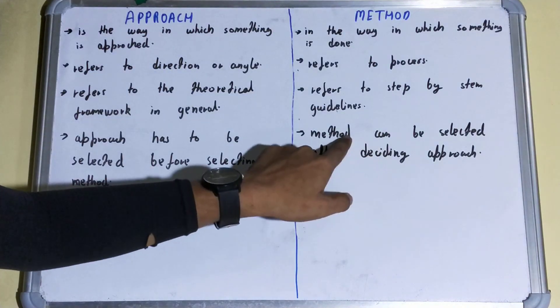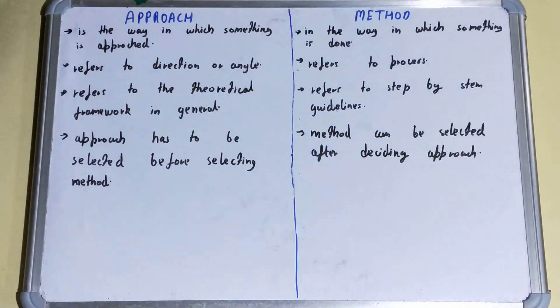In the case of method, the method can be selected after deciding the approach. So first you need to select the approach and then you can select the method. Like, I want to play aggressive - then accordingly you will select one of the methods from many.